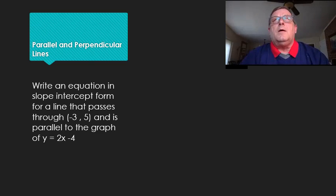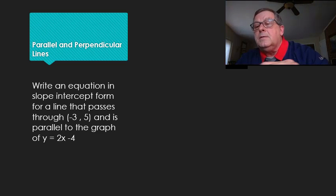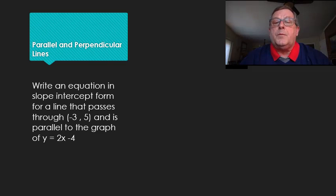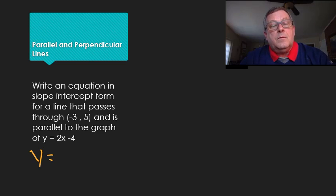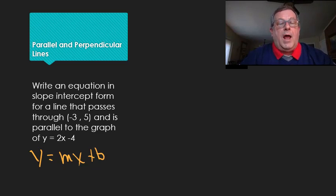I'm going to talk more about perpendicular lines in a moment, but right now I want to talk about parallel lines and look at this problem. We're being asked to write an equation in slope-intercept form — y equals mx plus b — and we're told that it passes through a point of negative 3, 5, and that it's parallel to the line 2x minus 4.